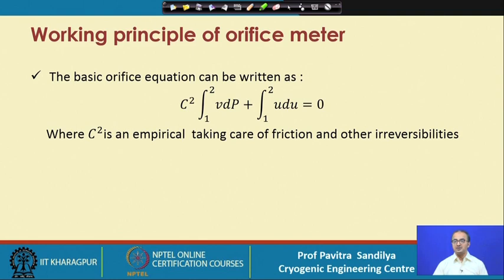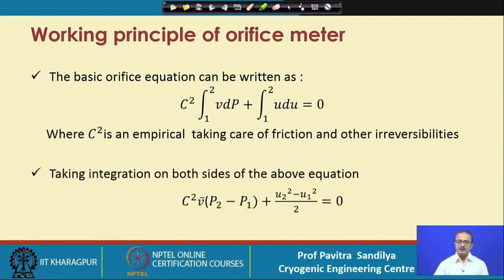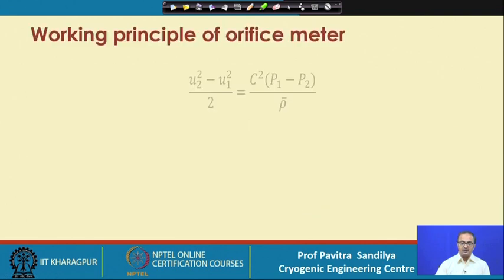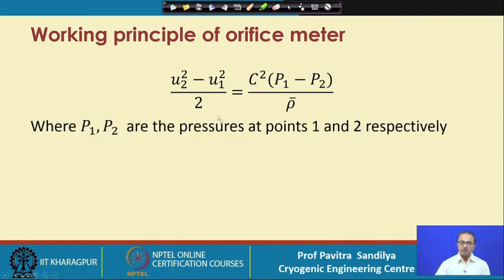We simplify Bernoulli's equation and integrate by assuming some average specific volume between points 1 and 2 — this is especially necessary in case of compressible fluids like gases. For liquids this may be assumed constant, but for gases we have to be careful. After rearranging, on the left-hand side we have the change in kinetic energy and on the right-hand side we have the change in pressure energy, using the pressures P1 and P2 measured by the pressure gauge and rho average (average density).